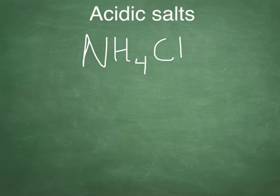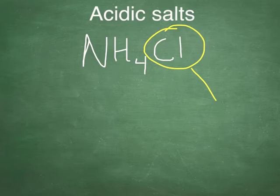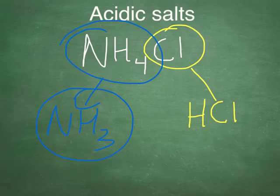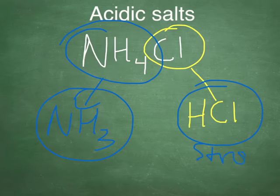Recall your Bronsted-Lowry definitions here. If this part came from an acid, that means this part is the conjugate base. So in order to become an acid again, you would add an H. So this would be HCl. Over here, this part is from the base. So it would have originally been NH3. Now look at these two things. This one came from a weak base. NH3 is a weak base. This one is a strong acid. You have a strong acid combined with a weak base.